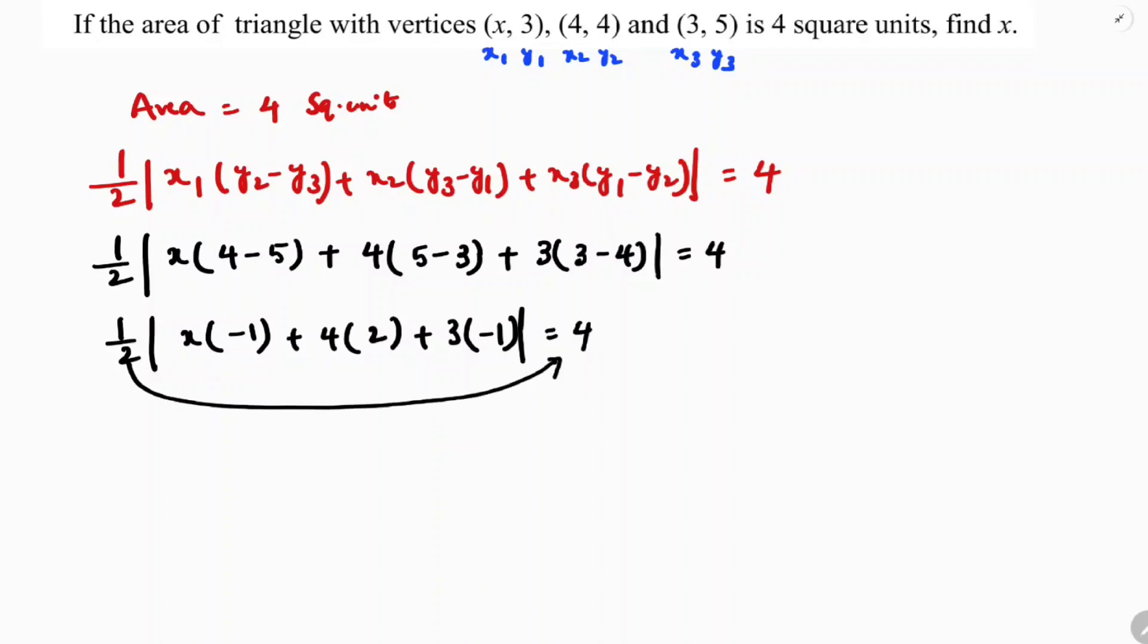Taking 2 to the right side, we get 4 times 2 equals 8. The absolute value of (-x + 8 - 3) equals 8. So |5 - x| = 8.